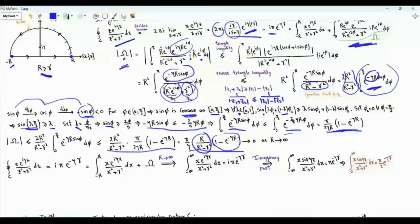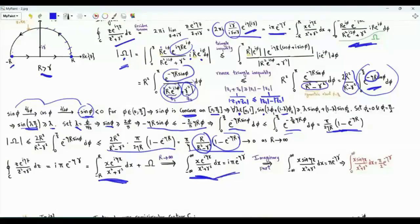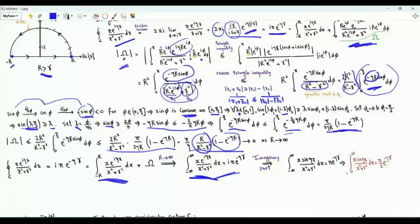Therefore the arc integral tends to 0 as R→∞, giving πi·e^(−ηγ) equal to the integral over all real x of x·e^(iηx)/(x²+γ²). Taking the imaginary part of both sides: the integral from −∞ to ∞ of x·sin(ηx)/(x²+γ²) dx = π·e^(−ηγ). Integrating from 0 to ∞ gives (π/2)·e^(−ηγ).